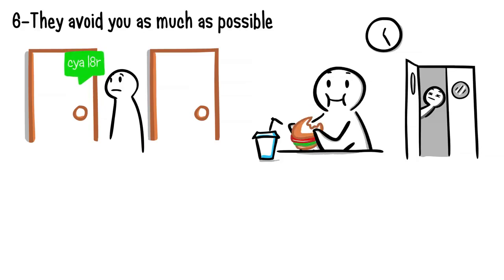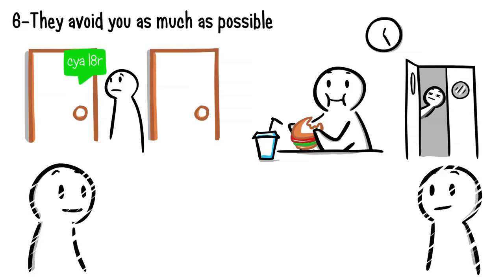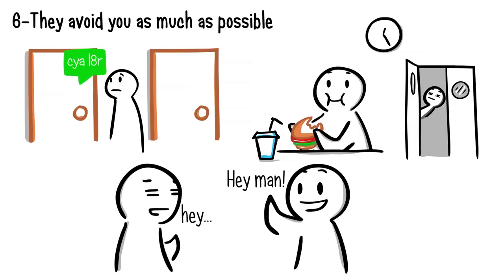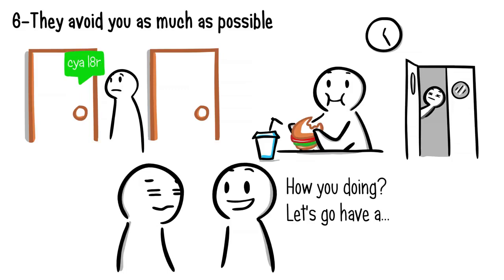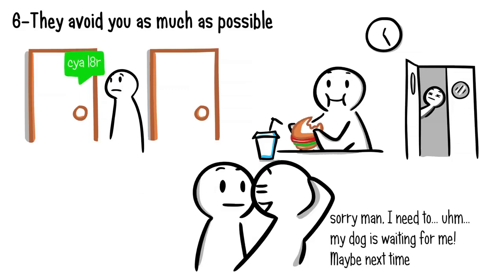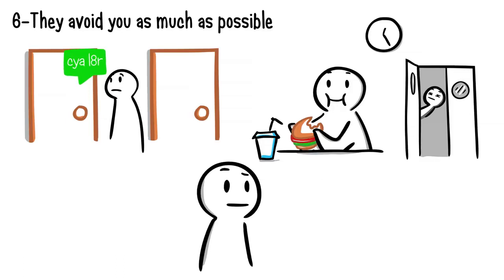It's especially a sign if they find out your schedule just to avoid you during your lunch hours or time you need to occupy the same space. And when you do end up bumping into one another, they'll always have an excuse ready at hand to avoid seeing you again.